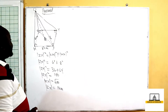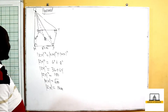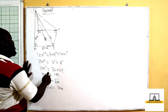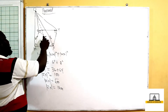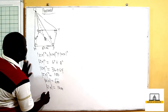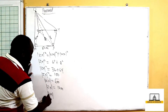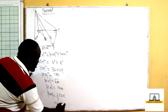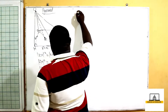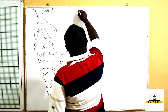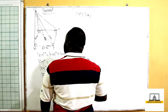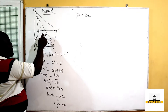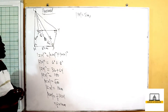Since ZX is 10 centimeters, the midpoint M divides ZX equally. So the magnitude of XM equals half of ZX, which is half times 10, giving us 5 centimeters. This means from X to M is 5 centimeters, and from M to Z is also 5 centimeters.